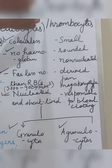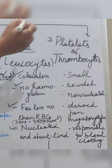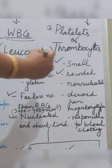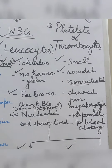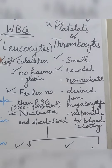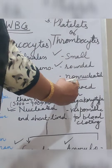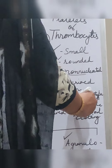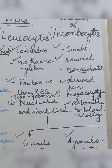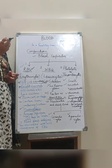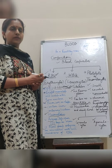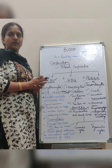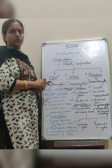The third category of blood cells is platelets or thrombocytes. These are small, rounded cells. They are also non-nucleated. They play an important role in blood clotting — when there is a wound and blood flows, platelets help in the clotting process.